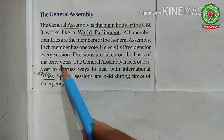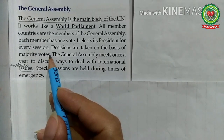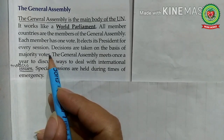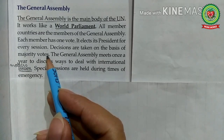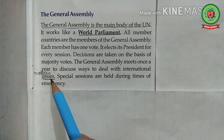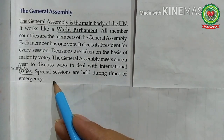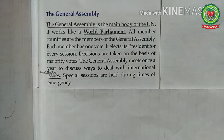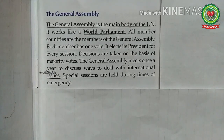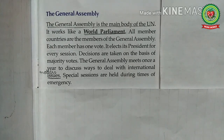Decisions are taken on the basis of majority votes. Basically, decisions are made by a two-thirds majority on important matters like electing non-permanent members of the Security Council, admission of new members, suspension of members, etc. The General Assembly meets once a year to discuss ways to deal with international issues. Special sessions are held during times of emergency — an emergency session of the General Assembly can be called anytime. The General Assembly can discuss and suggest solutions or give advice on any issue in the world within the limits prescribed in the Charter of the United Nations.